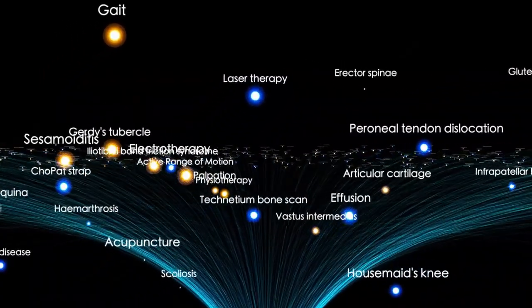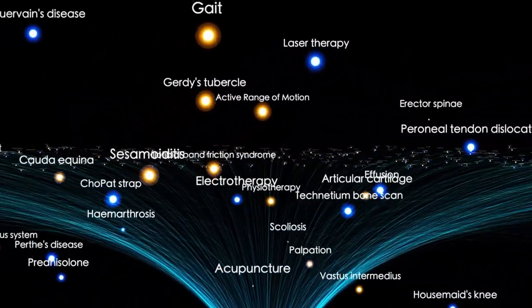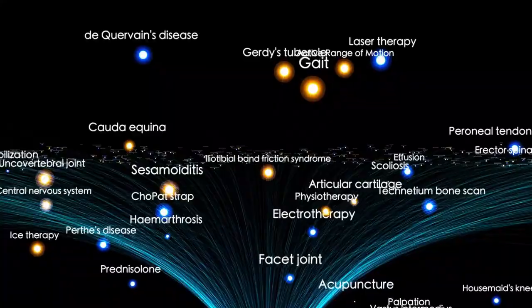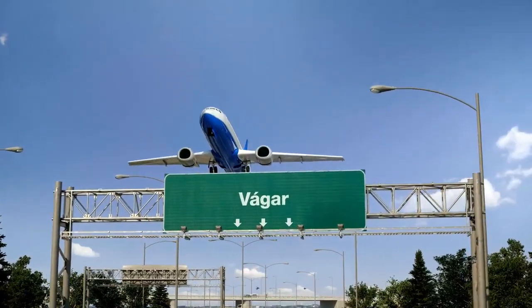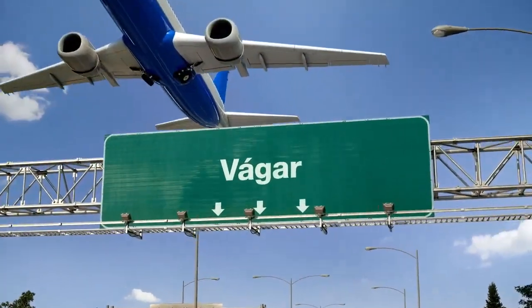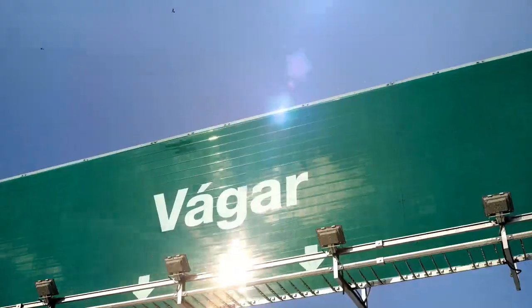Two identical spacecraft, Voyager 1 and Voyager 2, were constructed to take advantage of the alignment. They were launched just 15 days apart - Voyager 2 on August 20, 1977, and Voyager 1 on September 5, 1977.